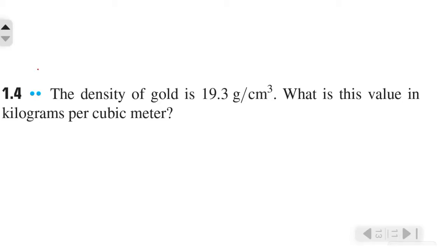For this problem, we have the density of gold is 19.3 grams per cubic centimeter. What is this value in kilograms per cubic meter? So from this problem, we are asked to convert 19.3 grams per cubic centimeter into kilograms per cubic meter. To do that, let's use our conversion factors.